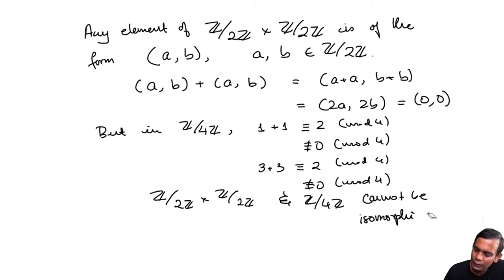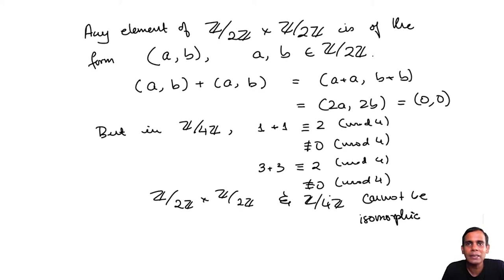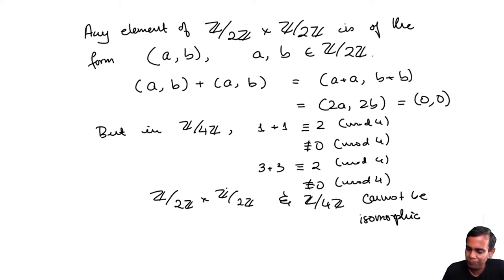Because if you had an isomorphism from Z mod 4Z to Z mod 2Z cross Z mod 2Z, where would it take the elements 1 and 3? There would be no place to take them, because every element in Z mod 2Z cross Z mod 2Z has the property that if you add it to itself, you get 0.